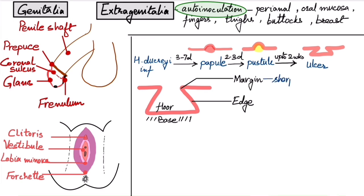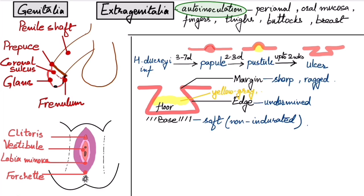The margin will be sharp and ragged. The edge is undermined. The base is soft or non-indurated. This differentiates it from the chancre. The floor is covered with yellow-gray necrotic or foul-smelling exudate over a layer of granulation tissue. This is the granulation tissue which bleeds easily.